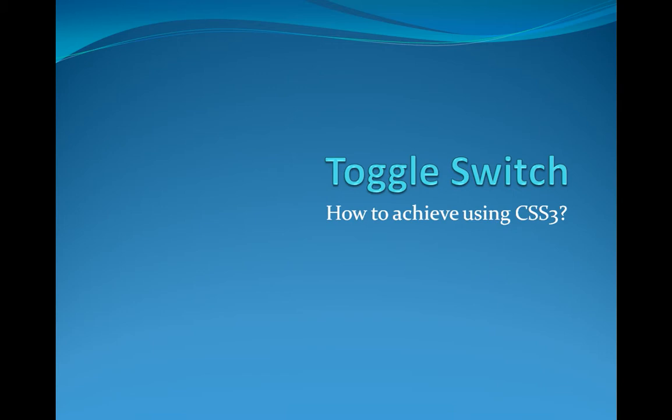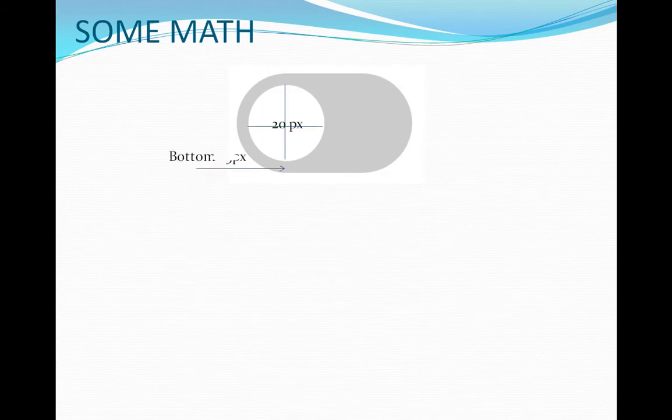Before moving further I would like to do some of the math that is required before we work on creating a toggle switch. So what is the math involved? If I want to create a toggle switch and the button that I want to toggle is of 20 pixels and the bottom margin is of 5 pixels, what will be the height of the entire slider? It is going to be 20 plus 5, that is 25, and the top 5.